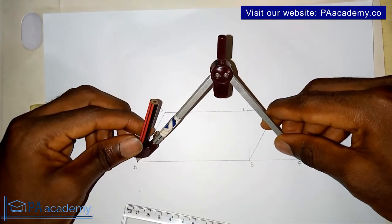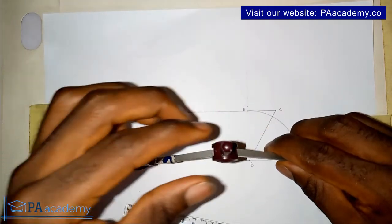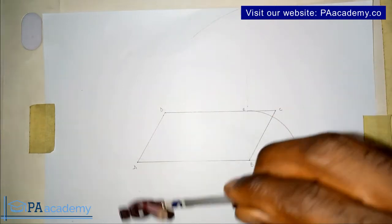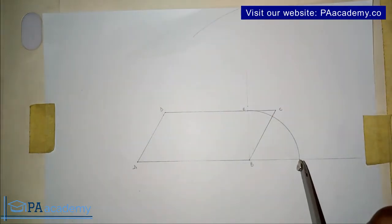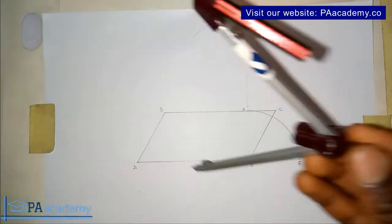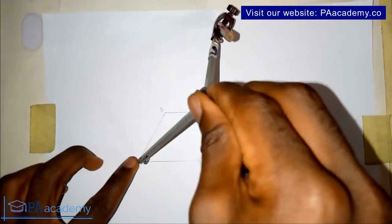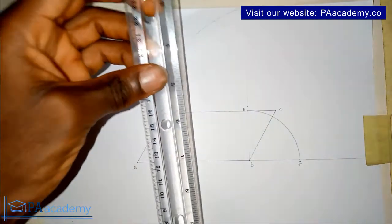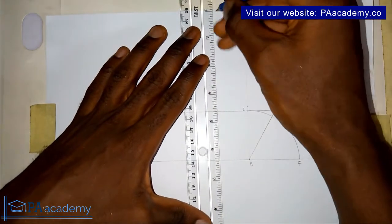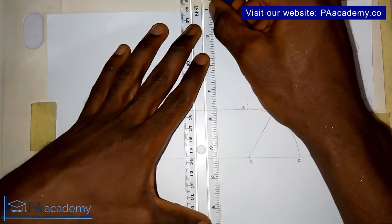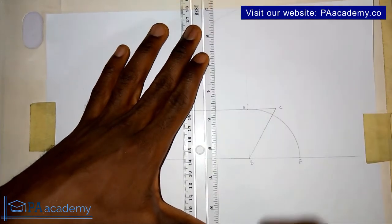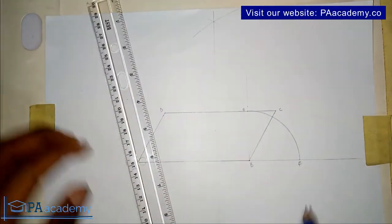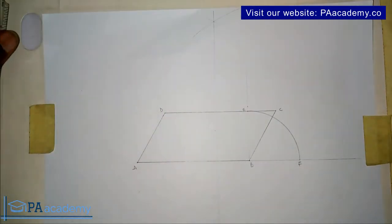With the length of AF on your compass, from point F draw an arc at the top and below. From point A with the same length, draw an arc at the top and below. Join the points of intersection — where it touches the line represents the center of line AF.